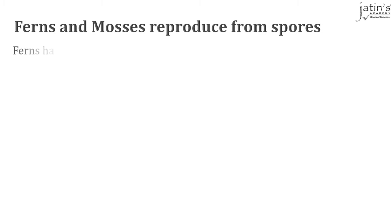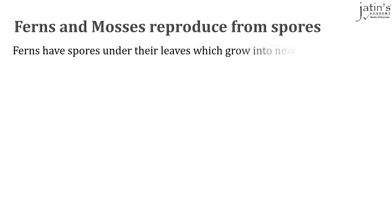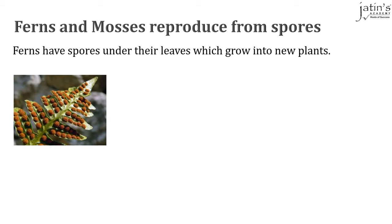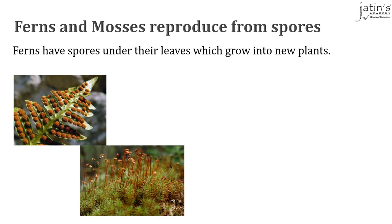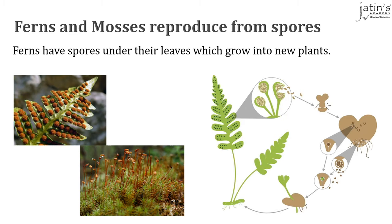Ferns and mosses reproduce from spores. Ferns have spores under their leaves which grow into new plants. Here we can see a picture of a fern with spores under the leaves, which when they fall into the right conditions will grow into a new plant.